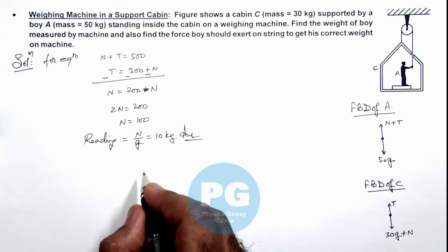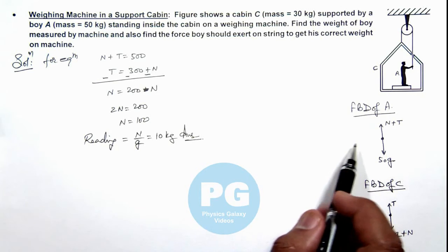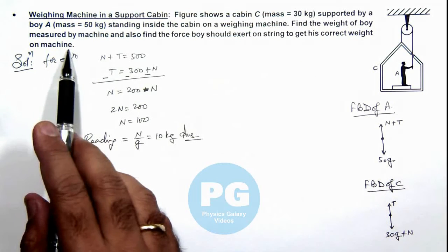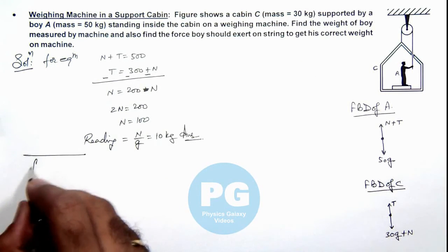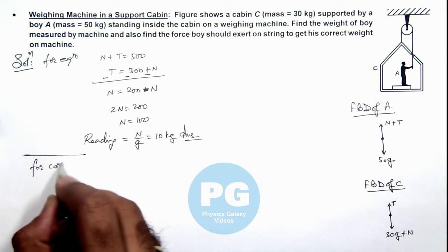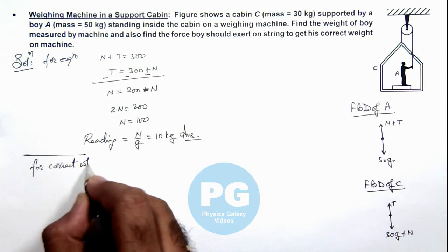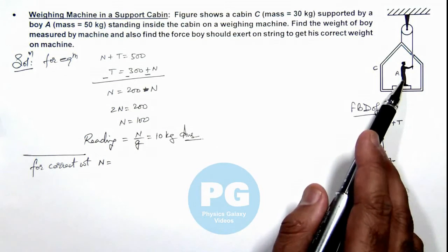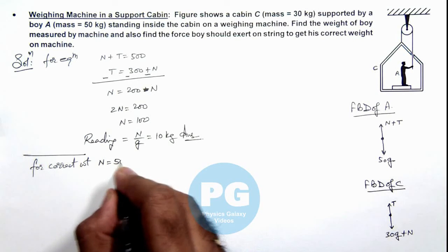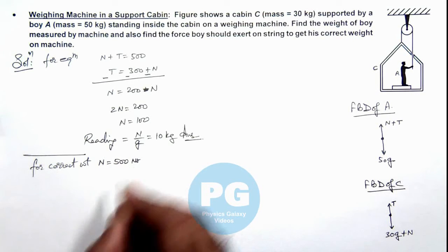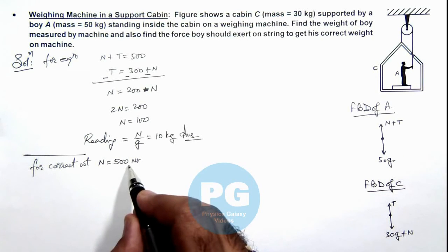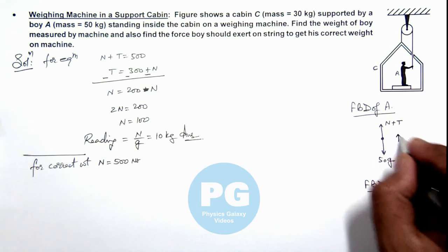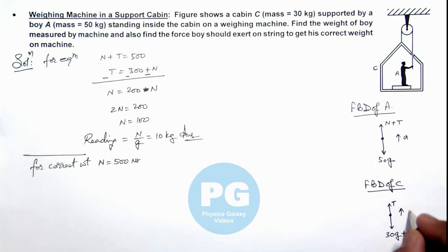Now if we reanalyze the situation to find the correct weight on the machine, the value of N should equal its weight, that is 50g, so we can write N to be 500 newton. In this situation, as N increases to 500 newton, the whole system will start accelerating up with an acceleration a. So if we rewrite the equations...